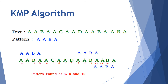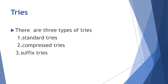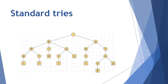Next is Tries. Tries are represented with trees and there are three types: standard tries, compressed tries, and suffix tries. In standard tries, every letter in the word is placed in nodes. The words bear, bell, bid, bull, and buy are placed with B as the main node.